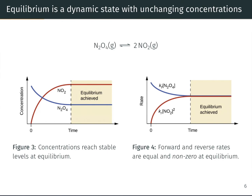If we just let that equilibrium tube sit there, the concentrations will appear to be unchanging with time, provided no other conditions like temperature or pressure change. If we graph the concentrations of N2O4 and NO2 over time, we start in the initial situation with only N2O4, and as that is consumed its concentration decreases. That N2O4 is being converted to NO2, which builds in over time. Once chemical equilibrium has been achieved, the concentrations do not change with time — we get flat lines for the concentrations for all eternity in the state of chemical equilibrium.